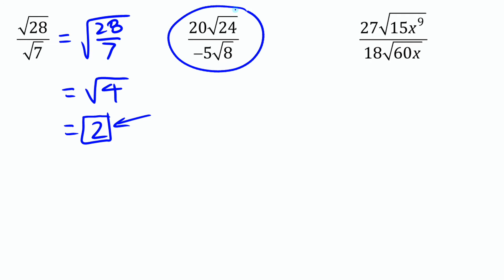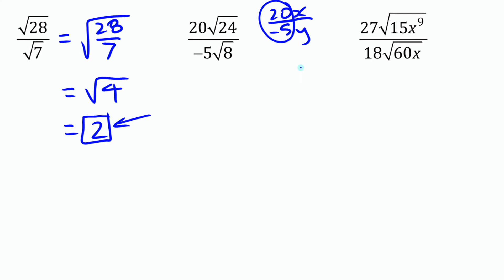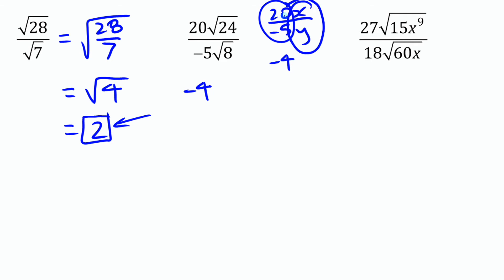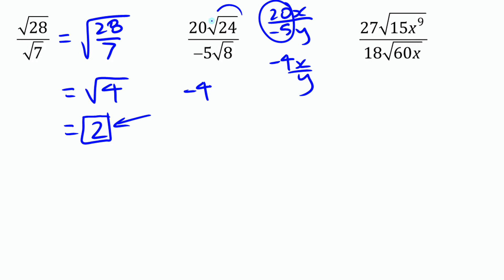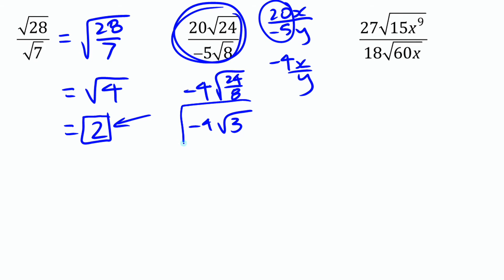If there are coefficients, it works the same way. Just like 20x divided by negative 5y, we can divide the coefficients separately to get negative 4. So we can divide those nicely and make it negative 4. In the variable case we'd have to leave it as x over y, but here since they're radicals and we know the numbers, we can divide them. Root 24 divided by root 8 is the same as root of 24 over 8, which is root 3.